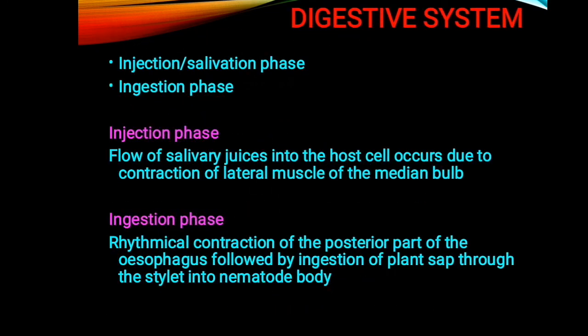Finally, about the two feeding phases: the salivation or injection phase, and the ingestion phase. In the injection phase, salivary juices flow into the host cell due to contraction of the lateral muscles of the median bulb — the mid part of the esophagus. In the ingestion phase, rhythmical contraction of the posterior part of the esophagus — the basal bulb — draws plant sap through the stylet into the nematode body. The median bulb plays a role in the injection phase, while the basal bulb plays a role in the ingestion phase. That's all — this is a quick glance of the digestive system. Thank you.